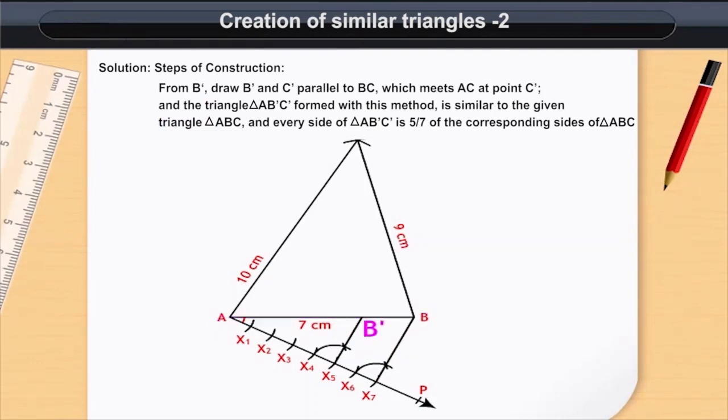From B dash, draw B dash C dash parallel to BC which meets AC at point C dash and the triangle A B dash C dash formed with this method is similar to the given triangle ABC and every side of triangle A B dash C dash is 5 by 7 of the corresponding sides of triangle ABC.